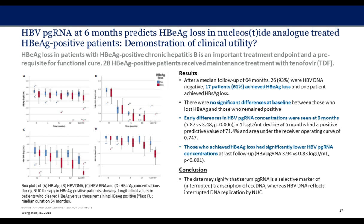Those who achieved S-loss had a significantly lower RNA level at the end of treatment. At last follow-up, RNA levels were markedly different between those who lost e and those who did not, implying that pre-genomic RNA is a selective marker for interrupted transcription of CCC DNA, whereas DNA reflects the interruption of DNA replication by nucleoside analogs.